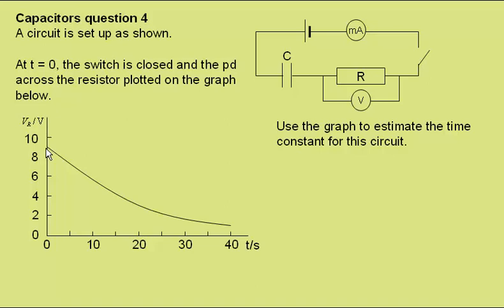Here the potential difference is starting at 9 volts and so what we need to know is when it will be roughly a third of that which is 3 volts. If we draw a line across from 3 volts it gives us a time constant of around 20 seconds.